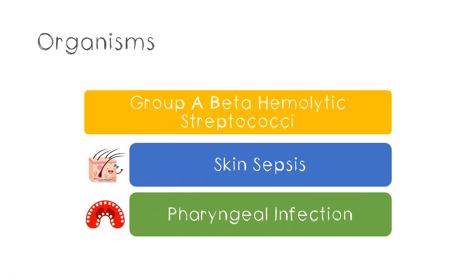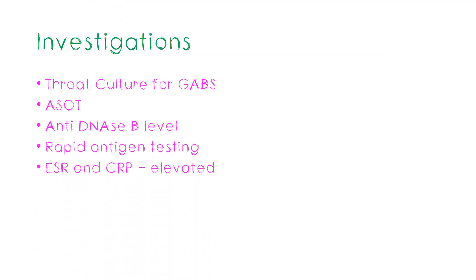Moving on to the microbiological aspect, the disease is caused by group A beta-hemolytic streptococci, found especially in pharyngeal infection and more rarely in skin sepsis, leading to the antibody production previously mentioned. Investigations include a throat swab for culture to identify group A beta-hemolytic streptococci, and anti-streptolysin O titres. Streptolysin O is an antigen produced by the bacteria, and anti-streptolysin O are the antibodies against it, which we measure. Other non-specific investigations include anti-DNase B levels, rapid antigen testing for strep, and ESR and CRP, which will be elevated.